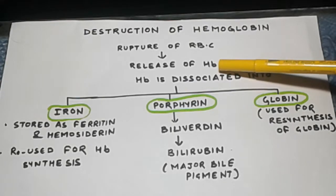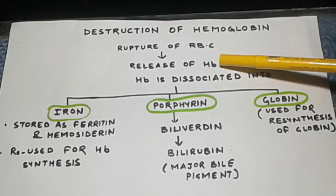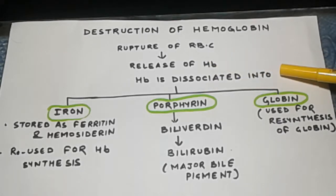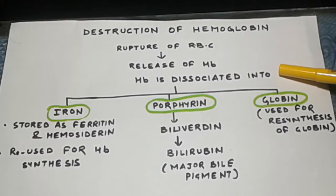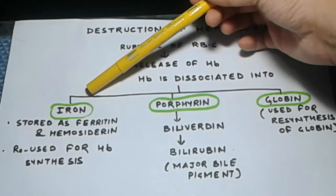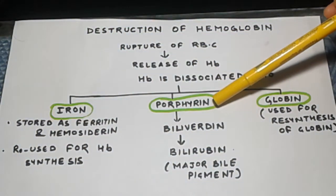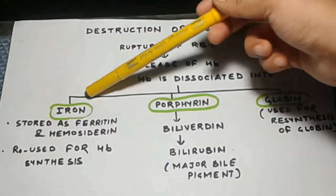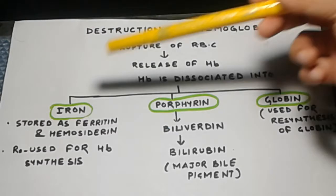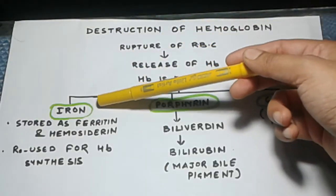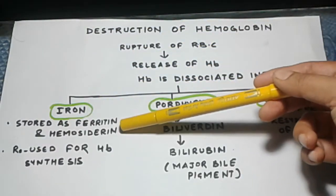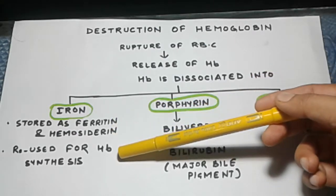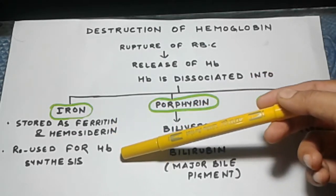After releasing, hemoglobin is dissociated into iron, porphyrin, and globin. Iron is stored as ferritin and hemosiderin, which is reused for hemoglobin synthesis.